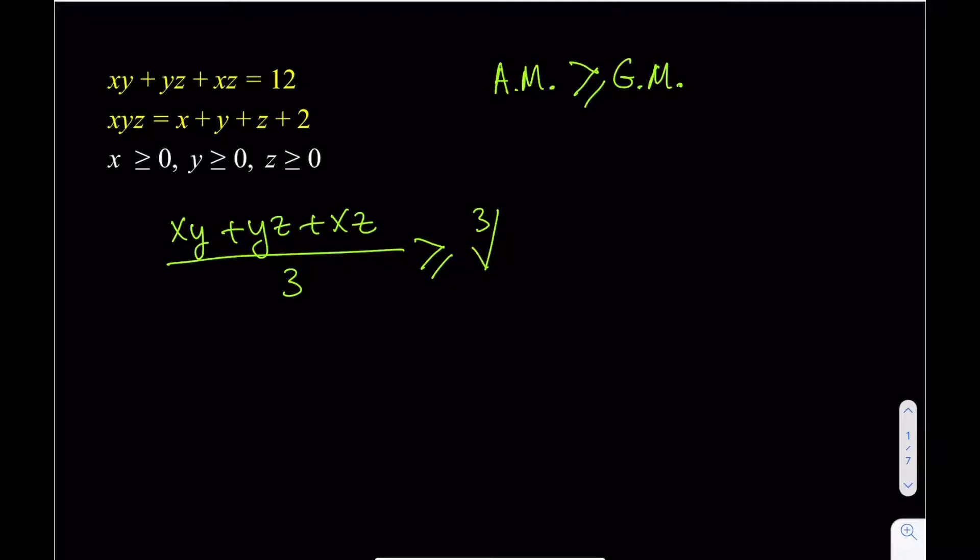So, what we're going to do is we're just going to multiply them together: XY, YZ, and XZ. Now we do know that this sum is equal to 12. So, I can just go ahead and replace that with 12. 12 divided by 3 is going to be 4.